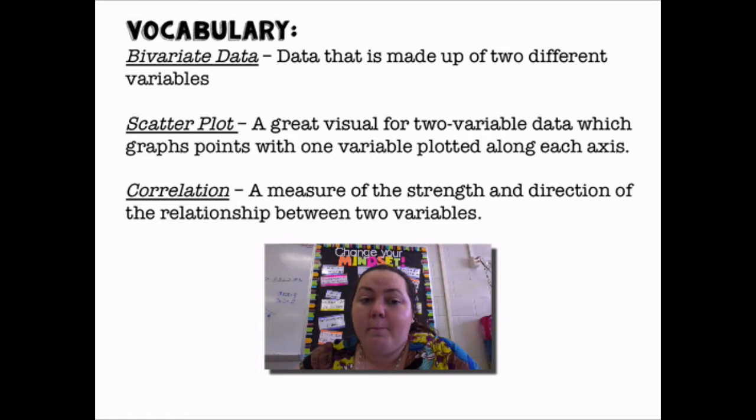So some vocabulary. Bivariate data is data that is made up of two different variables. Bi means two, variate means variables. So bivariate data has two variables.